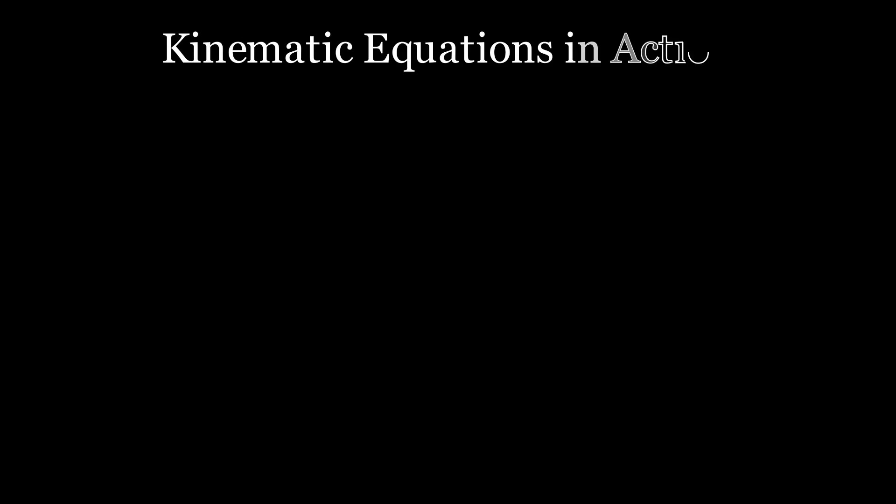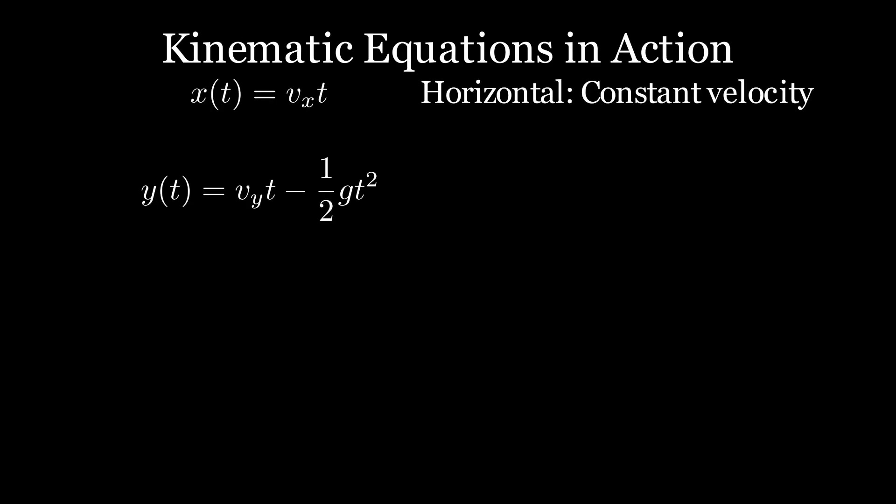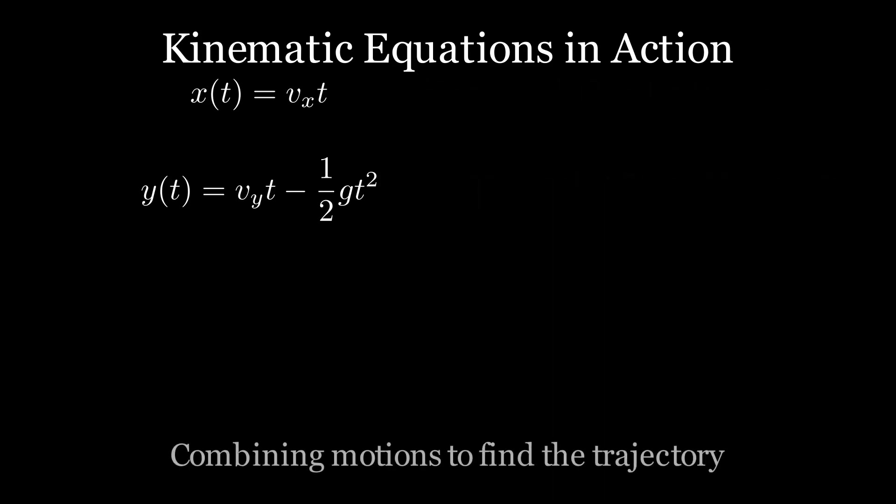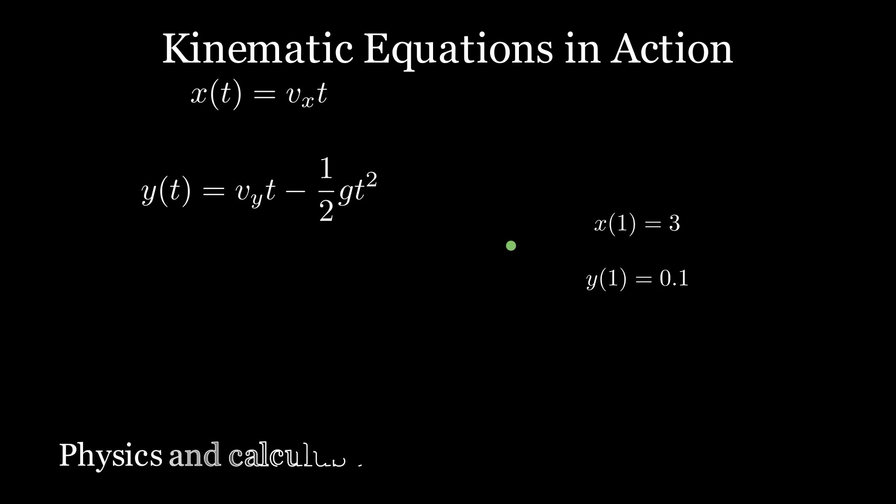If you've taken an AP physics or college level physics course, you might recognize that we can solve this problem using kinematic equations. The motion in the horizontal direction is linear, while the vertical motion is governed by constant acceleration due to gravity. When we combine these two motions, we get a trajectory that follows a parabolic path. Let's see how this works in practice. When t equals 1, the x position will be 3, and the y position will be 0.1.